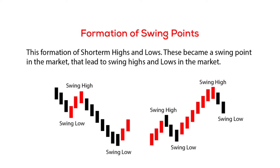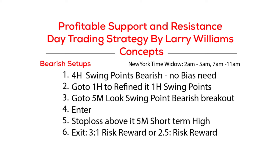This formation of short-term highs and lows becomes swing points in the market, leading to swing highs and swing lows. Whenever price creates a low, then a high, and price takes out that swing low making the trend bearish, you wait for a retracement to the swing low or to the swing high. This swing low to swing high zone normally acts as resistance in a bearish scenario. When price creates a higher high, the previous swing high to swing low normally acts as support for price to go further.